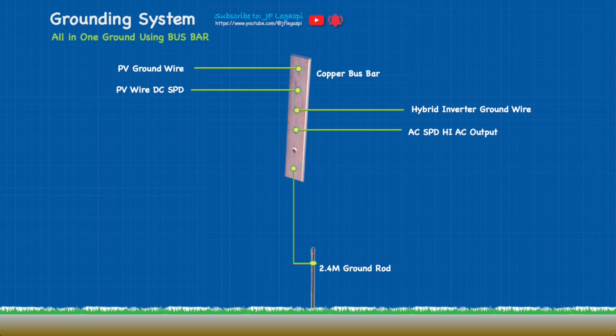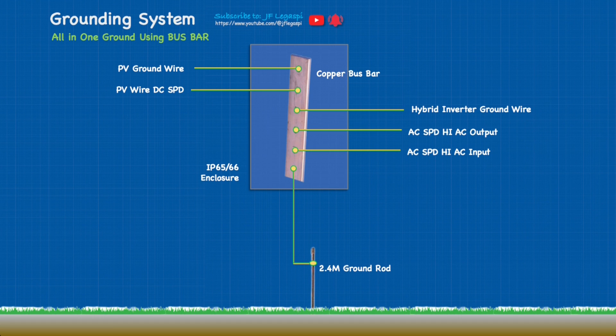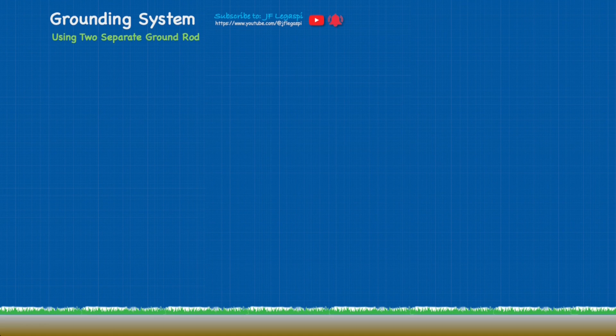We also have the hybrid inverter and ground wire, AC SPD hybrid inverter AC output, and of course the AC SPD hybrid inverter AC input. And if needed, you can enclose this with an enclosure that is rated IP 65 or IP 66.